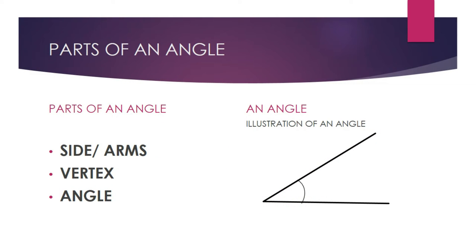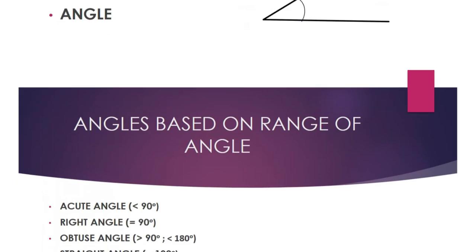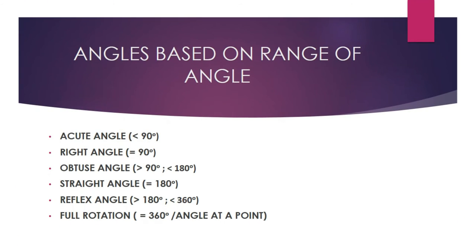Parts of an angle: we have the arms or the sides — these are two straight lines or segments. We have the vertex, which is the point where the arms and lines meet. Lastly, the angle is the measure of the rotation between the initial and final position of the arms.